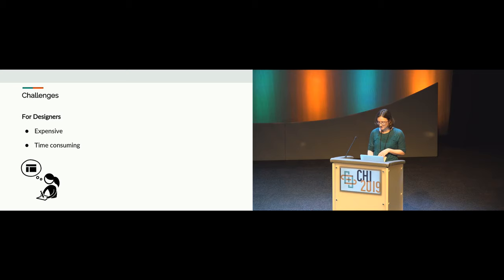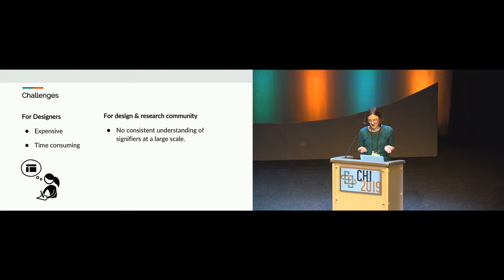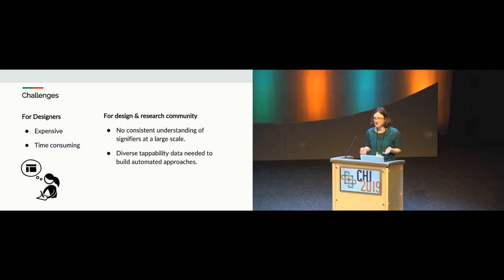Additionally, for the design and research community, we are only conducting these studies on a small scale or on a single interface or set of interfaces. So we don't have a good consistent understanding of which signifiers are having an impact across all interfaces. In order to create an automated approach, we need a diverse set of tappability data across lots of different interfaces.